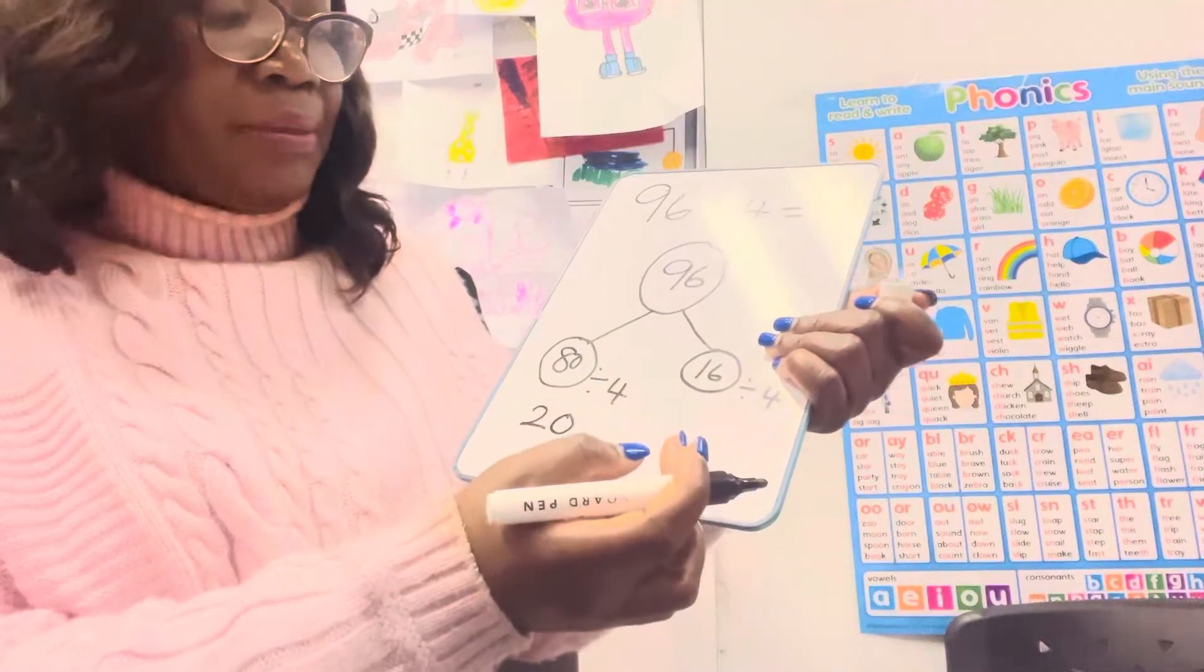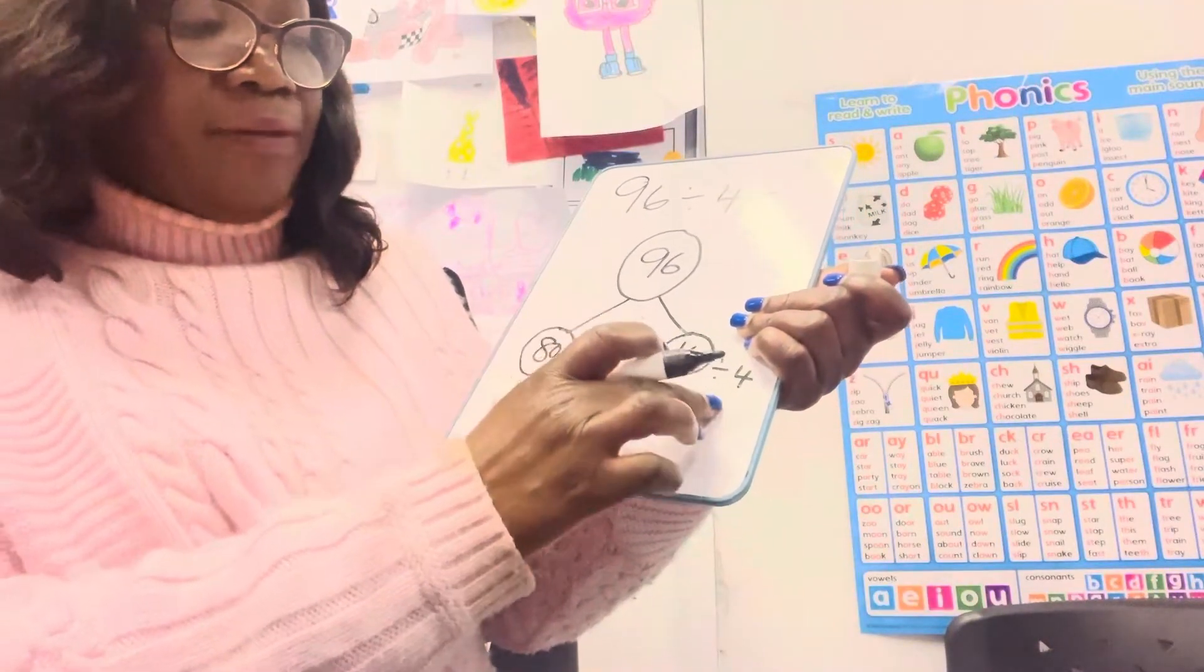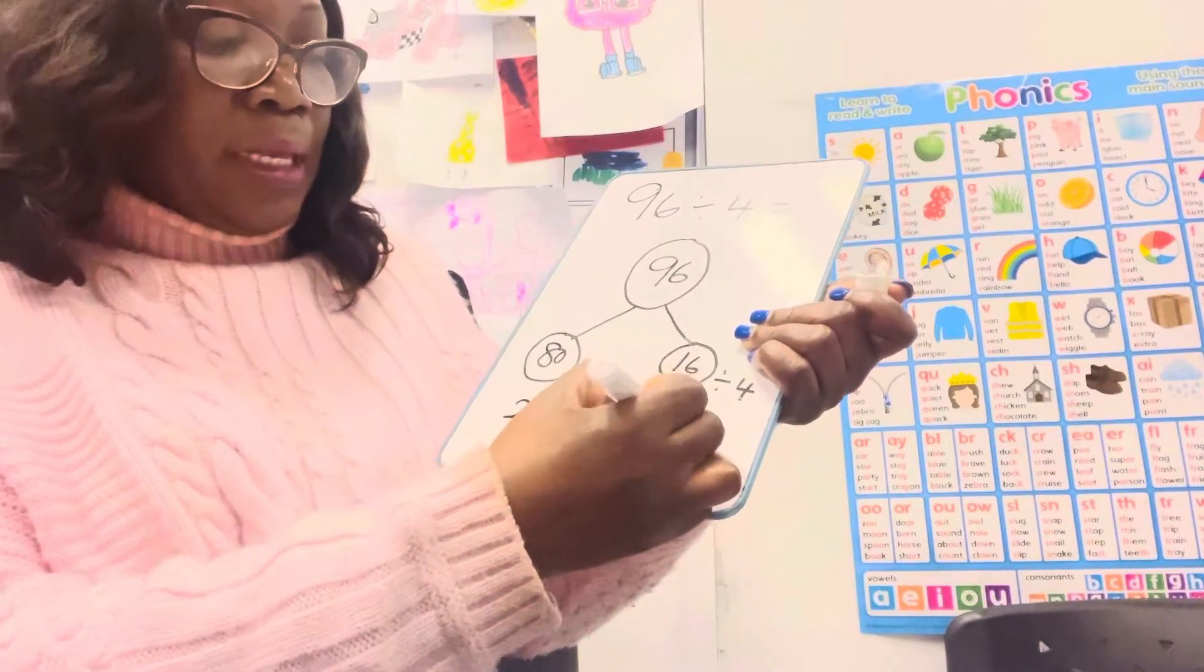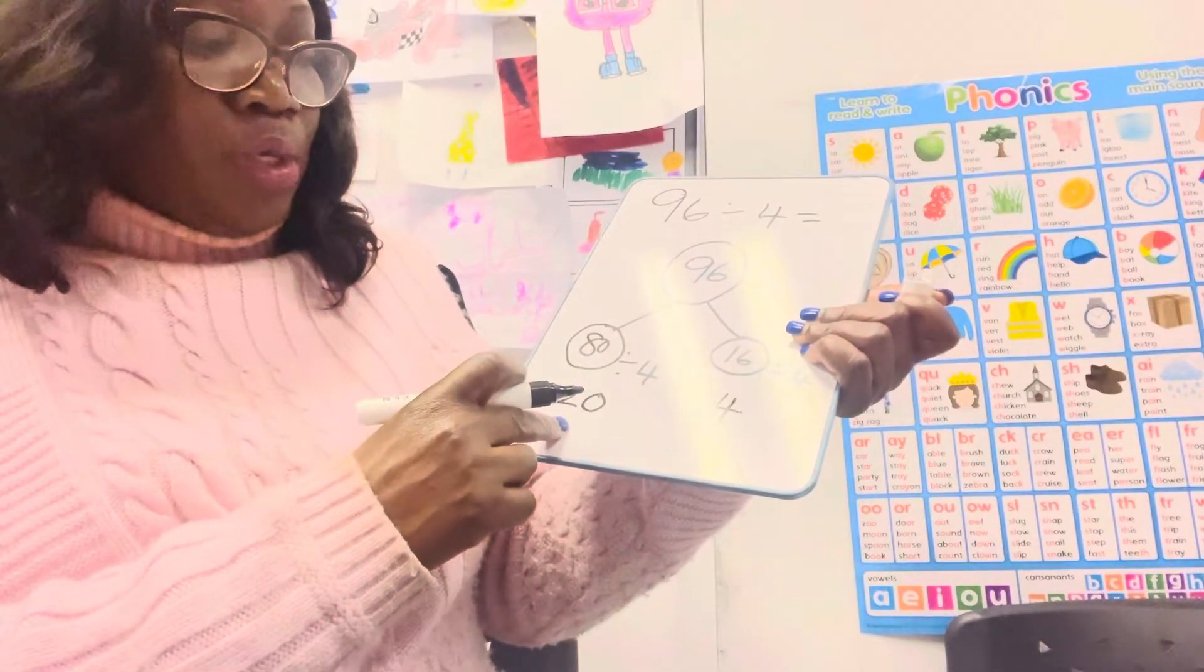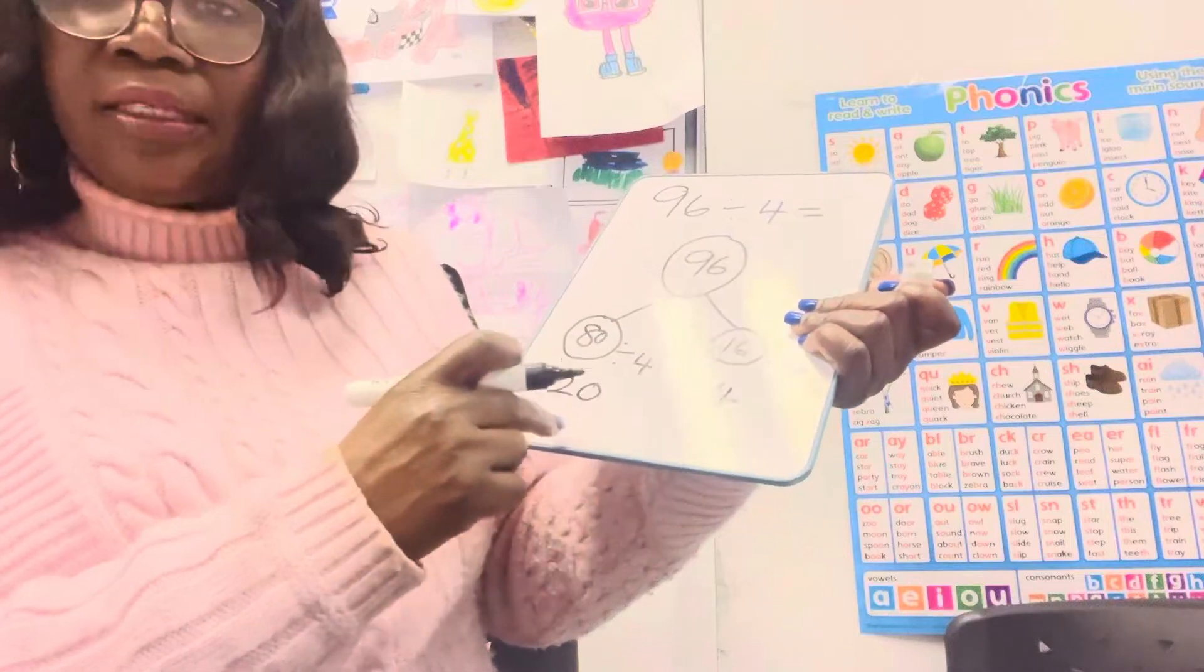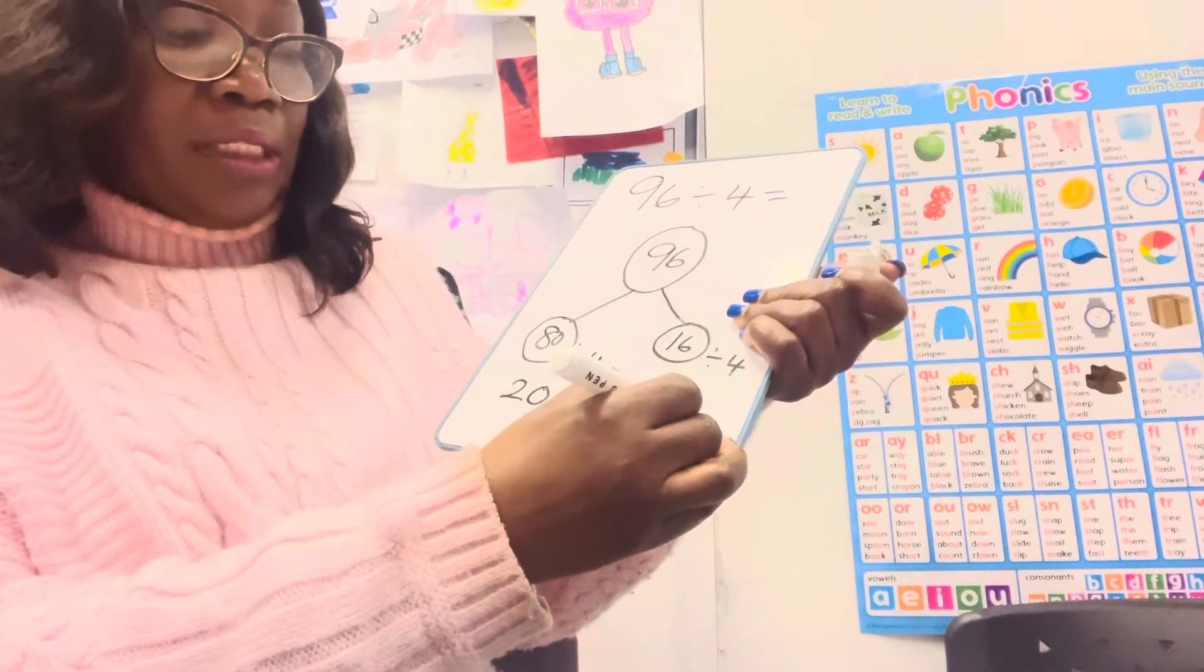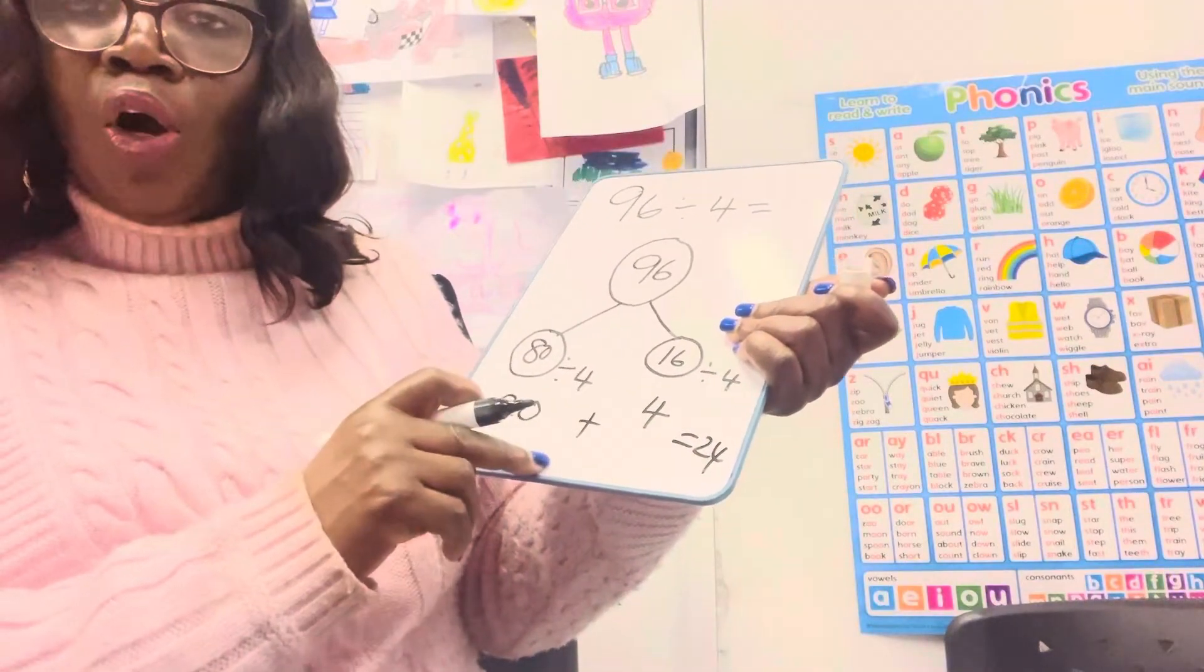You should know your 4 times table now, so 16 divided by 4 is 4. And this is what you do at the end: you just add the answers together. So 20 plus 4 will make 24, and that is how you do your division.